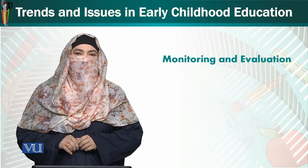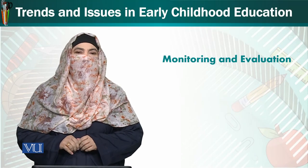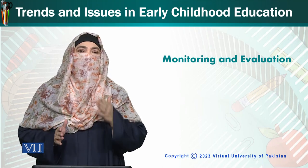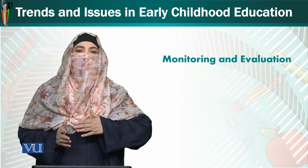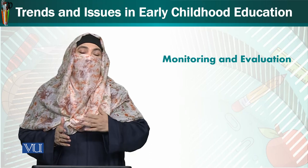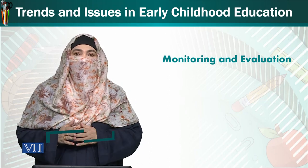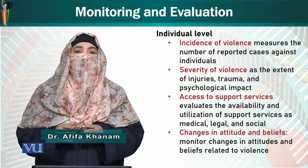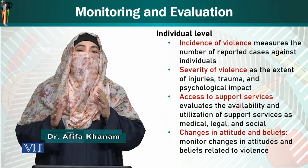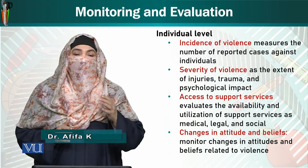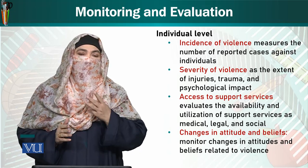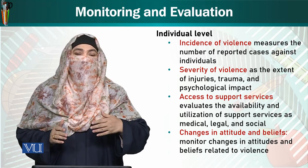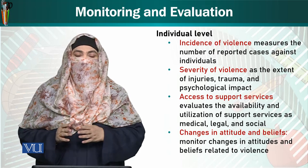Under the course of trends and issues in early childhood education, we were discussing UNICEF strategies and action plan for all the world, especially for developing countries. One of the most important steps is monitoring and evaluation of the plans against children's violence. It comes at three levels — the first one is the individual level, where benchmarks are assessed at individual level.